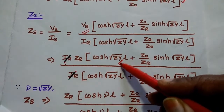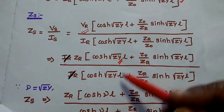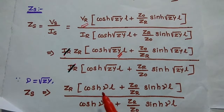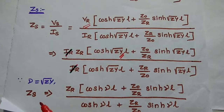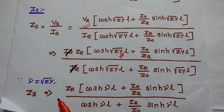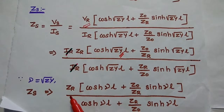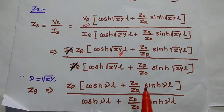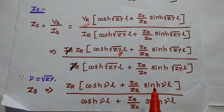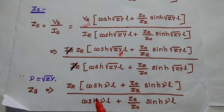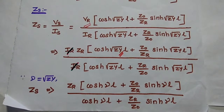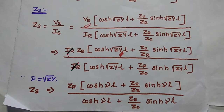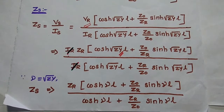For further simplification, we replace √zy with gamma. In the next step, we represent that value as gamma. So Zs is equal to Zr into cosh(γl) plus Z0 by Zr into sinh(γl), the whole divided by cosh(γl) plus Zr by Z0 into sinh(γl).